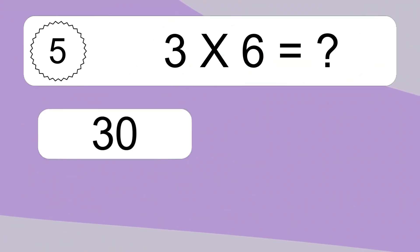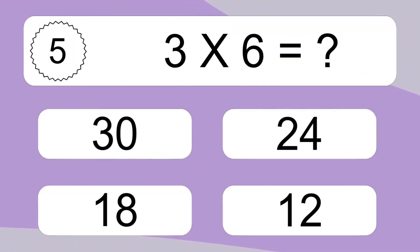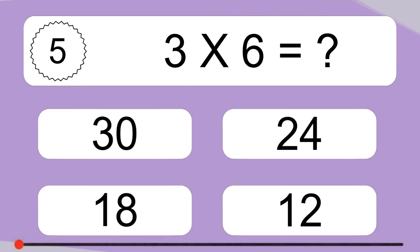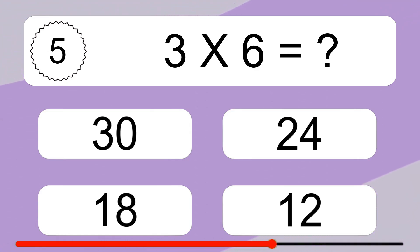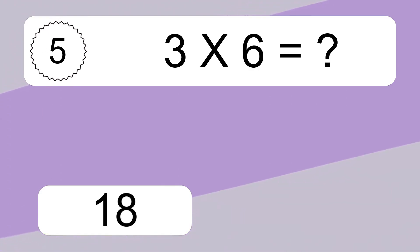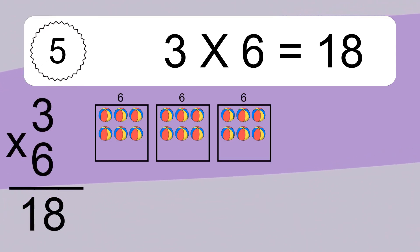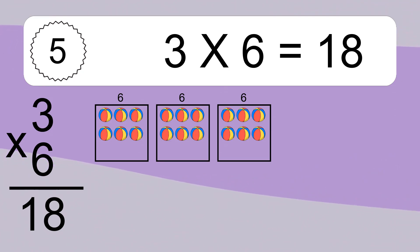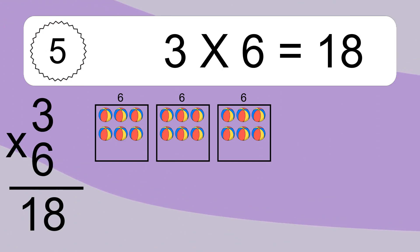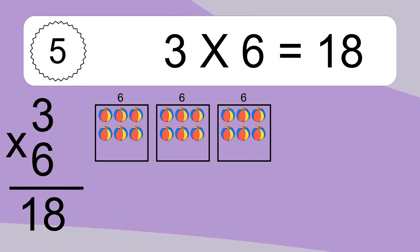3 times 6 equals what? 3 times 6 equals 18. We have 3 boxes, and each box has 6 colorful balls inside. If you count all the balls in all the boxes together, you will have 3 times 6 balls. This equals 18 balls.